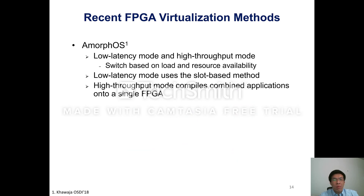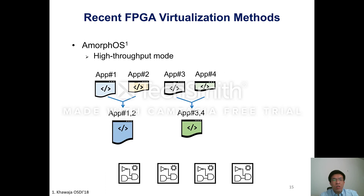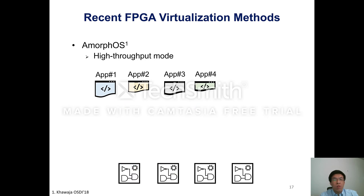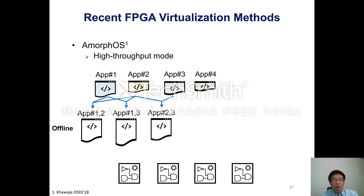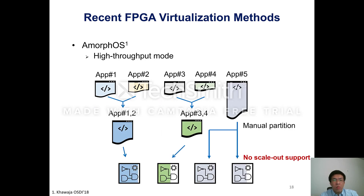AmorphOS is another interesting work on FPGA virtualization that achieves much better FPGA sharing than the slot-based method. It provides two operating modes and switches between them based on load and resource availability. The low-latency mode uses the slot-based method, while the high-throughput mode compiles the combined application onto a single FPGA to enable FPGA sharing. This mode can achieve better FPGA sharing, but the improvement could be limited because it has no multi-FPGA support. Moreover, since performing compilation at runtime leads to high overhead, this mode needs to offline compile many combinations to support diverse runtime requests, increasing offline compilation cost. Users must also manually partition large applications to realize scale-out acceleration.